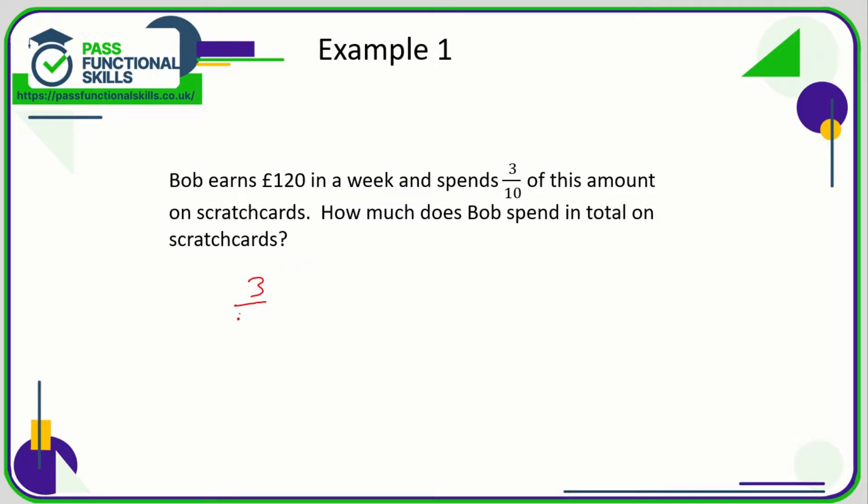Well, Bob spends three-tenths of £120, so we're working out a fraction of an amount. What we're going to do is divide by the number on the bottom, take our total, divide it by the number on the bottom, and then multiply it by the number on the top.